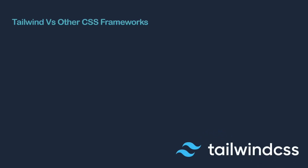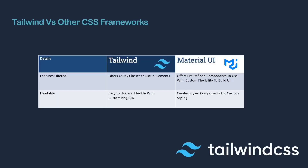Let's look at the differences between Tailwind and other CSS frameworks, specifically Material UI. The features offered with Tailwind include utility classes to use in elements. We add the classes directly to the elements, so we do not use predefined components.